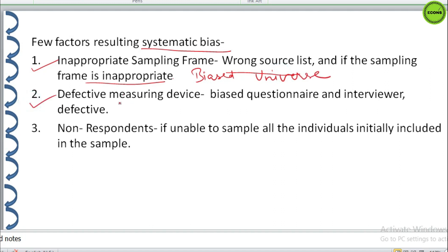The second point is defective measuring device. If the measuring device is constantly in error, it will result in systematic bias also. Like in survey work, systematic bias can result if the questionnaire or the interviewer is biased. So, it should be prepared very carefully. Similarly, if the physical measuring device is defective, there will be systematic bias in the data collected through such a measuring device.